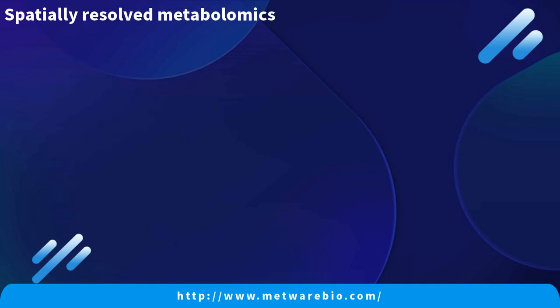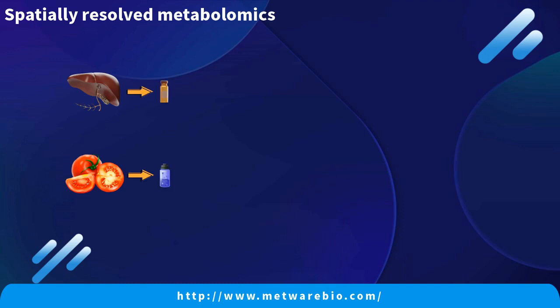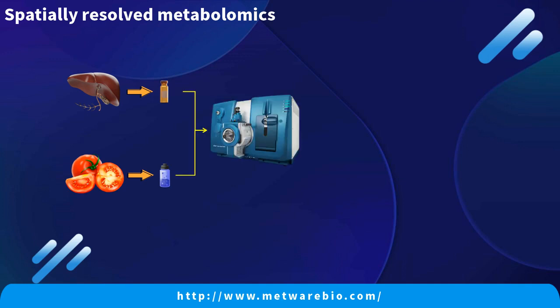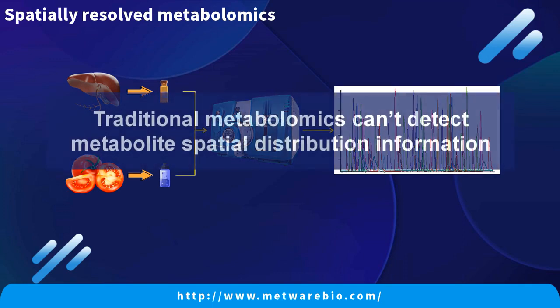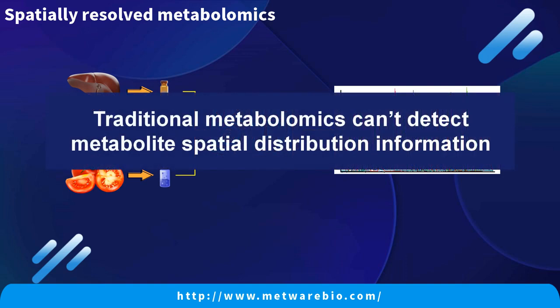Let's start with traditional metabolomics. For traditional metabolomics, first you need to get tissue samples — animal or plant. Then the metabolites in the tissue are extracted, and the extracted liquid is tested on the machine. Finally, the content of metabolites in the whole tissue is obtained. From this, we can see that traditional metabolomics cannot detect metabolite spatial distribution information.